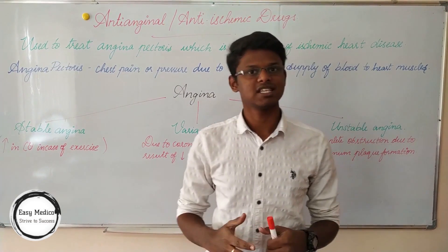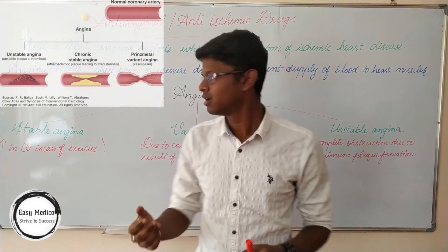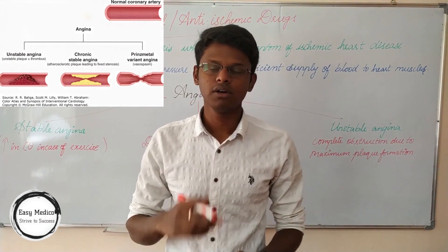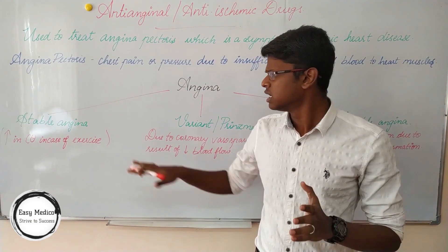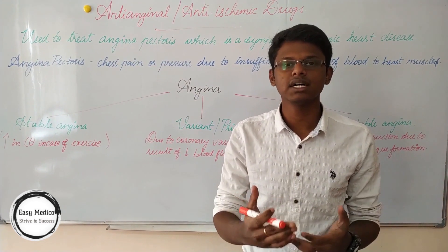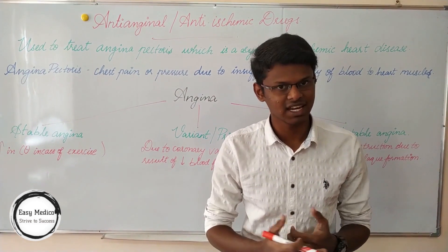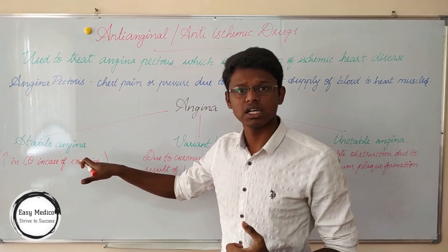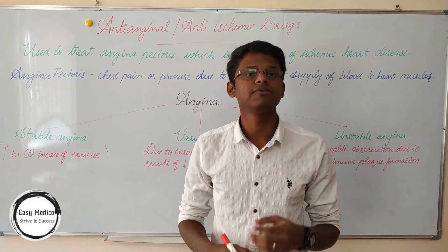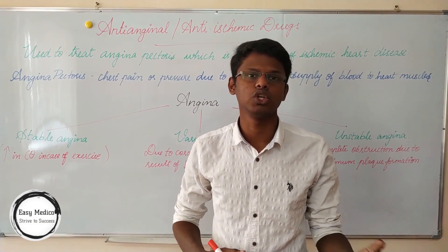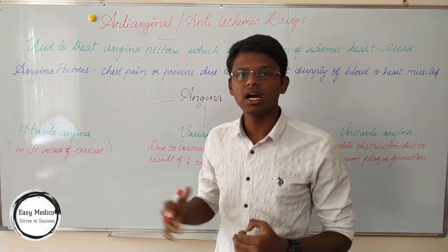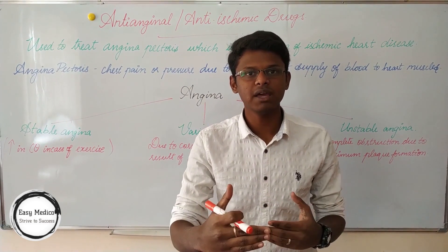Angina can be classified into three types: stable, variant or Prinzmetal, or unstable angina. Stable angina can also be known as classical angina, typical angina, or exertional angina. This occurs in cases of increased cardiac output during physical exercise conditions or emotional conditions. The pain occurs with a duration of five minutes.